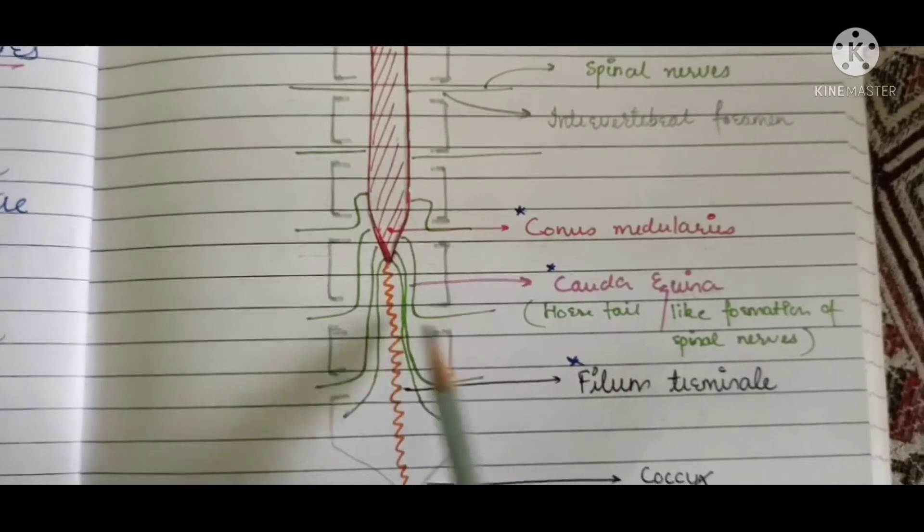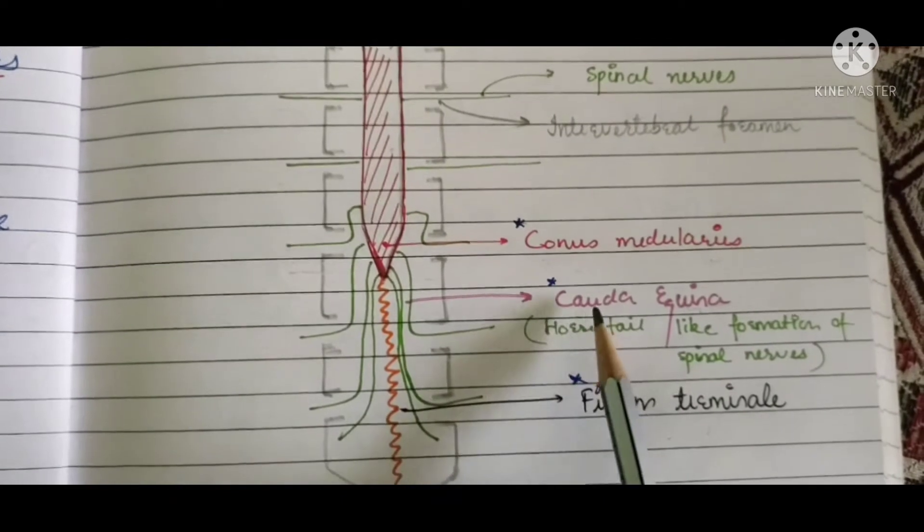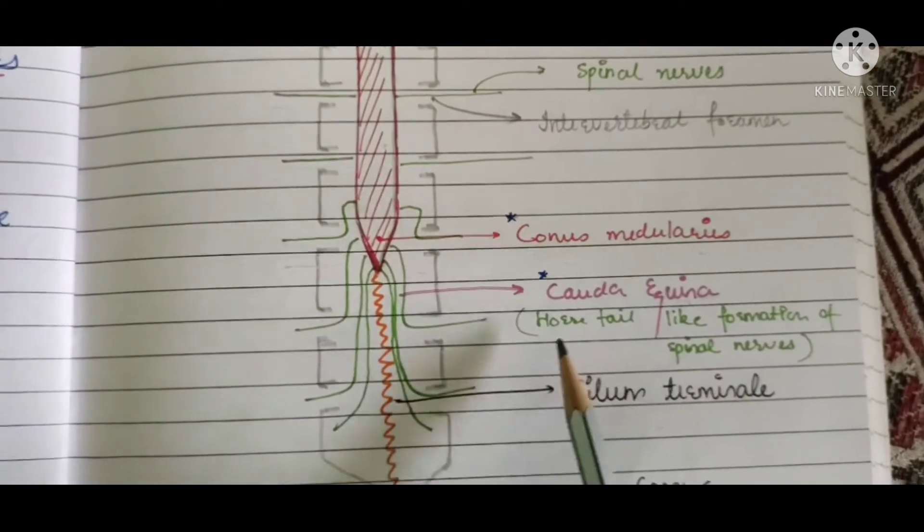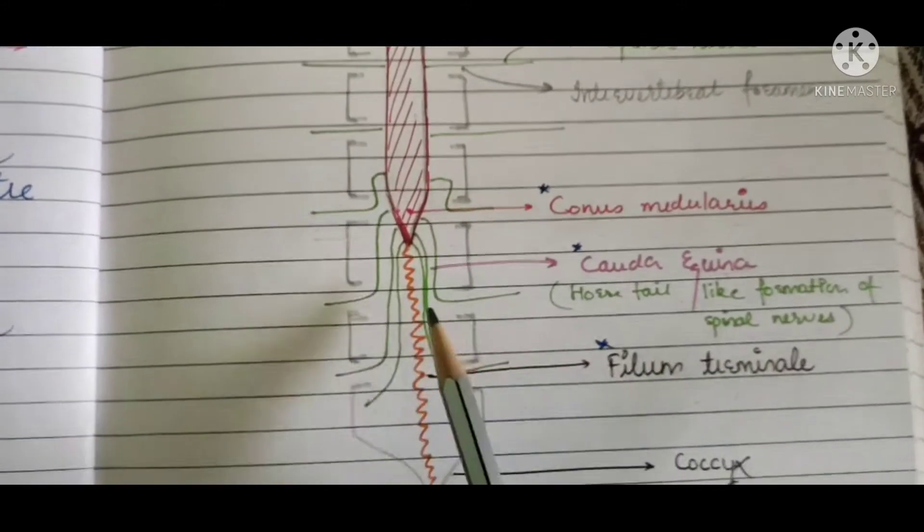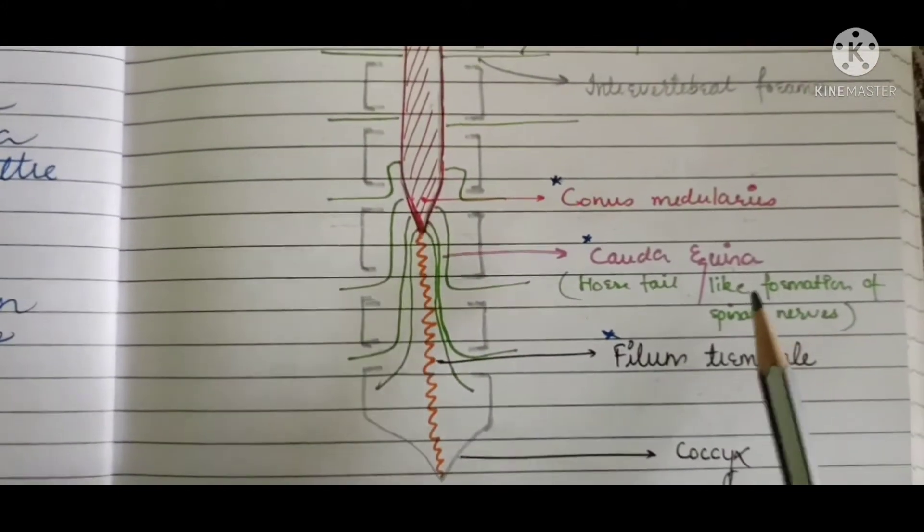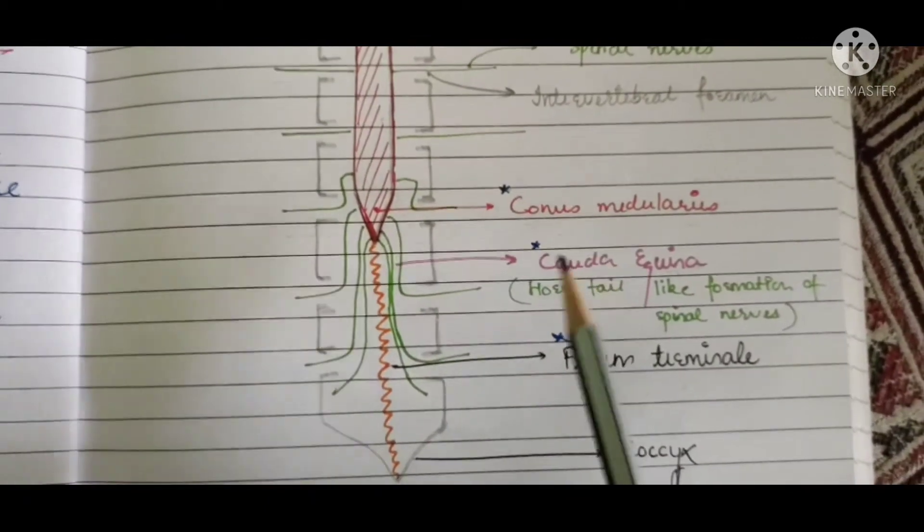This aggregation forms a horse tail-like appearance. That is what we know as cauda equina. Cauda means horse, so horse tail-like appearance. It resembles a horse tail. So this is what we know as cauda equina, that is to say, horse tail-like projection.